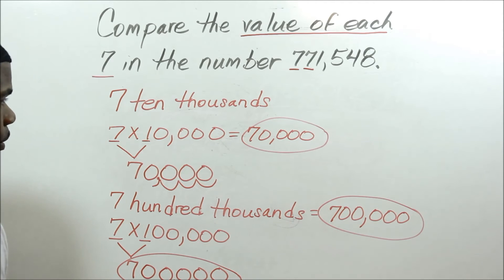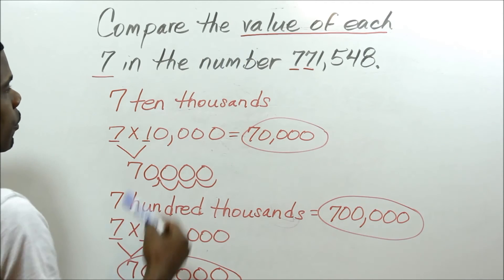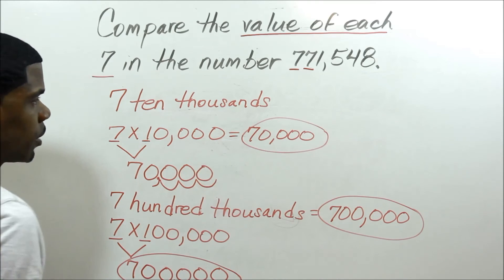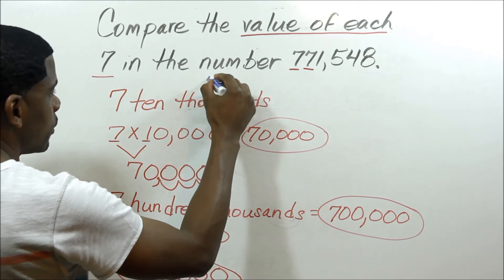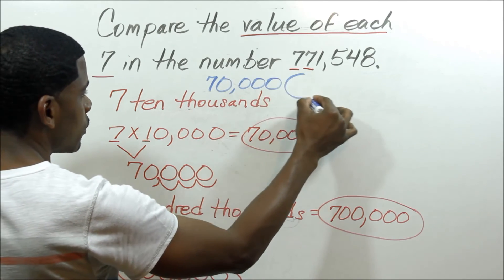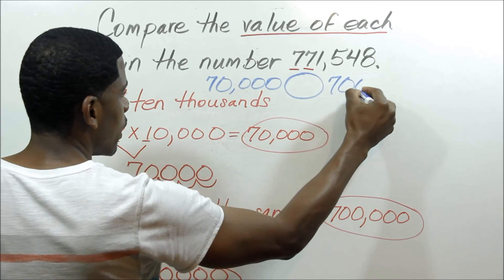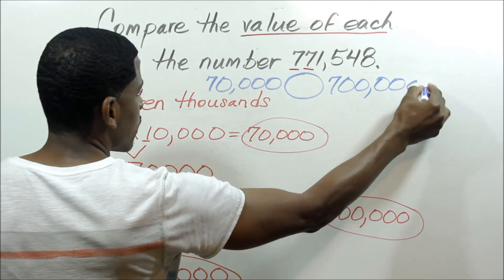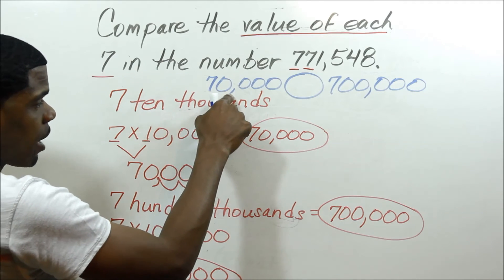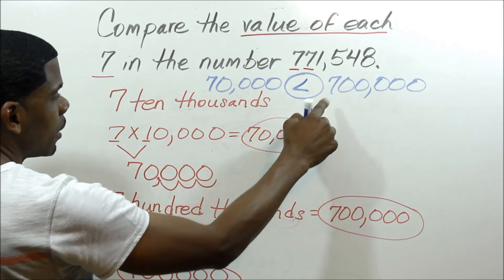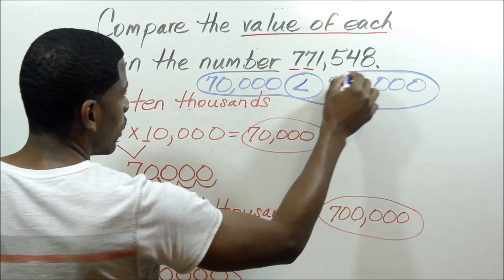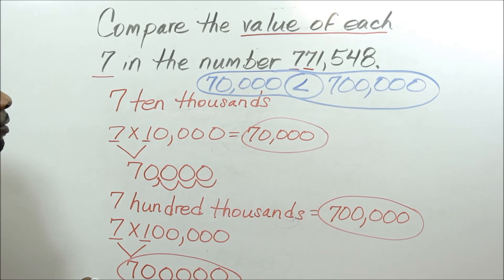So now what I can do from here is compare — it says compare the value of each 7. I take the values of each 7 and plug them in. So I say: 70,000 compared to 700,000. So: 70,000 is less than 700,000. That is one quick way of comparing those two 7s.